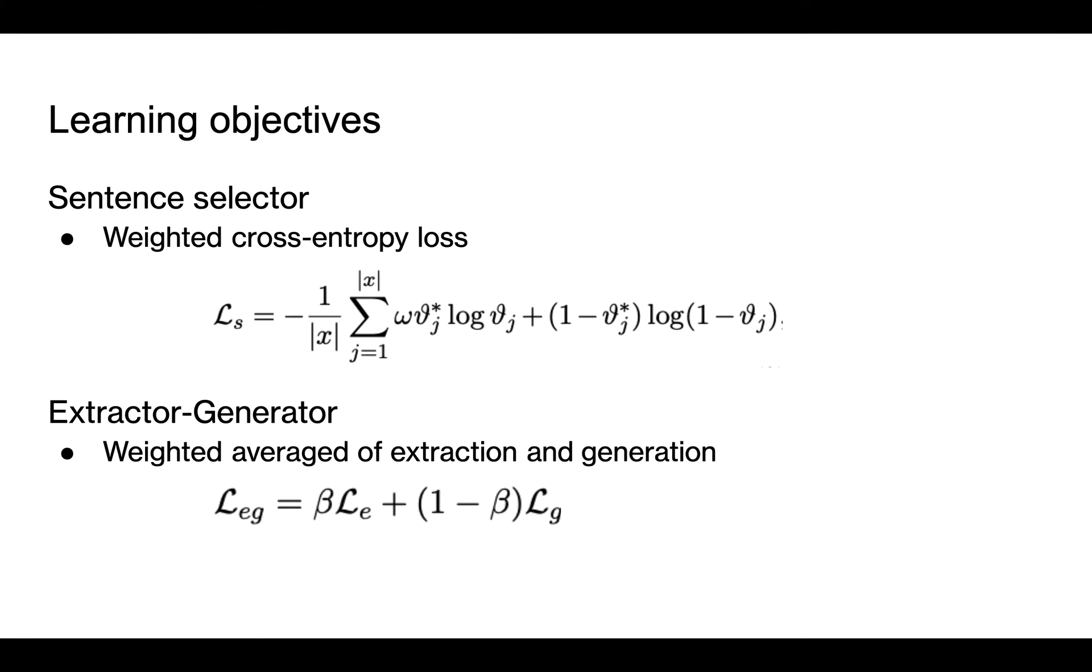As learning objectives, the sentence selector is a binary classifier, so we use the weighted cross-entropy loss, Ls. The loss of extractor-generator is computed as a weighted average of the extraction and generation losses. The extractor treats the extraction task as a binary classification, so the extraction loss, Le, is computed in the same way as Ls. The generation loss, Lg, is computed as a negative log-likelihood of the ground truth's absent keyphrases.